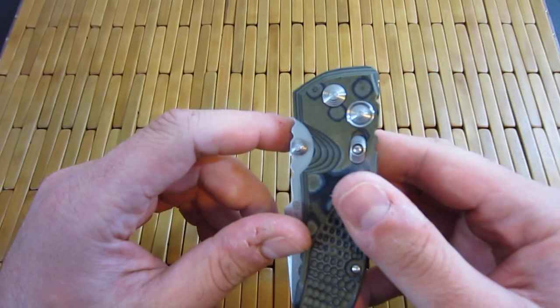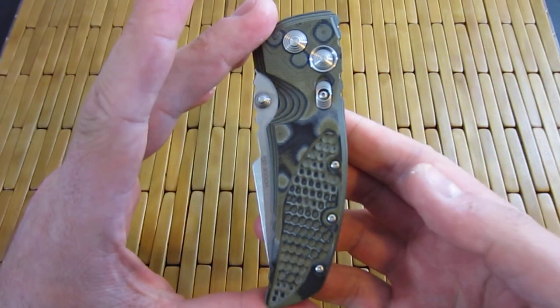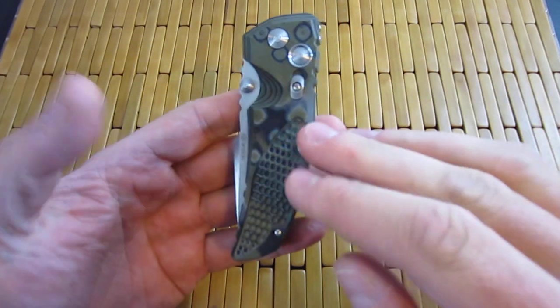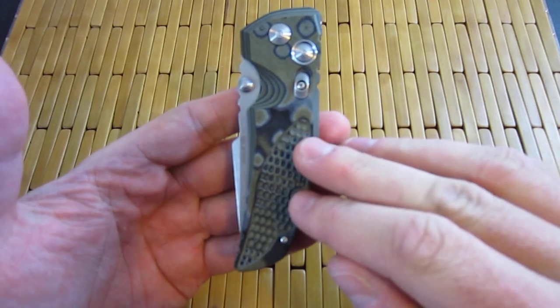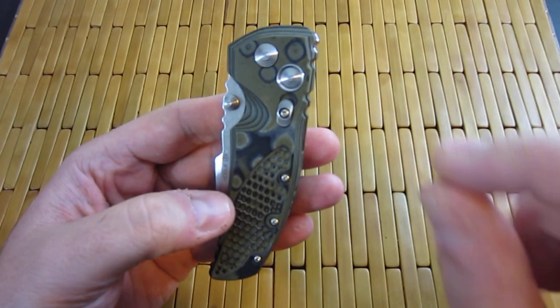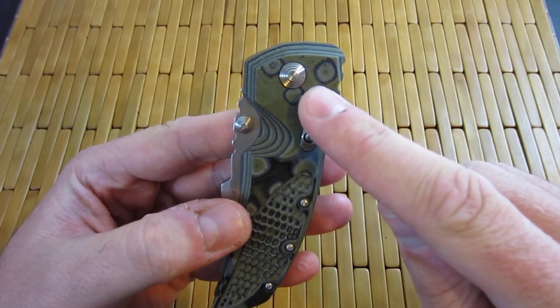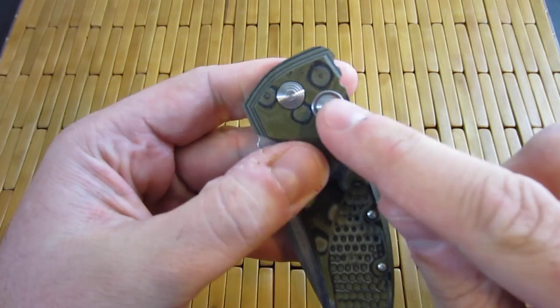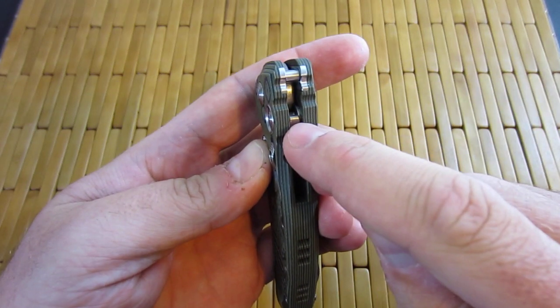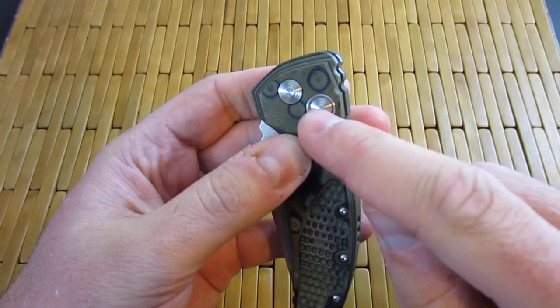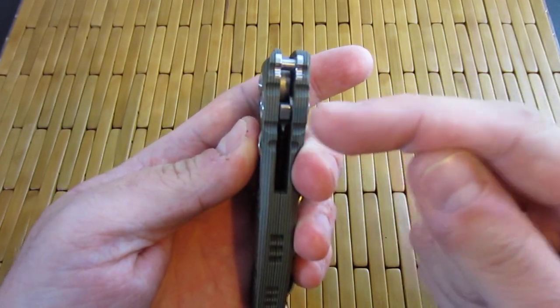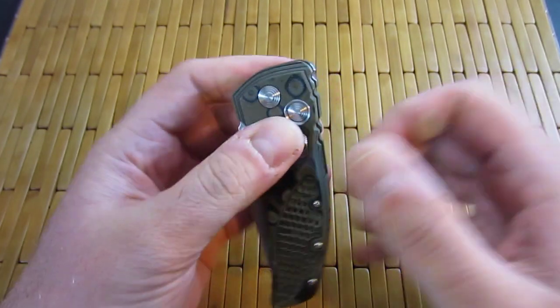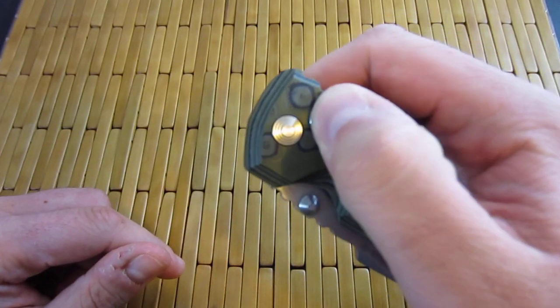So, button lock. The button lock I'm showing here is actually a non-auto. An auto would be slightly different. Here's your button right here. It's held captive from coming out this way, but there's a spring inside that is pushing constantly this way. This whole assembly is under tension to move outwards, which is why it takes pressure to press the button.